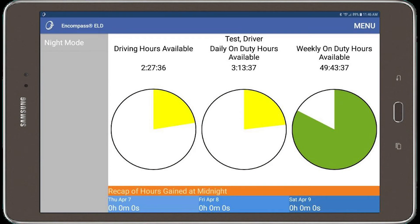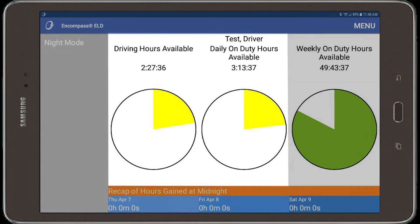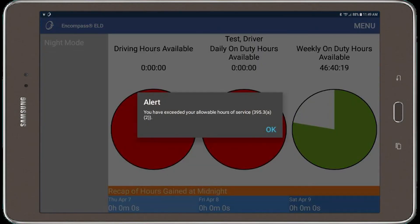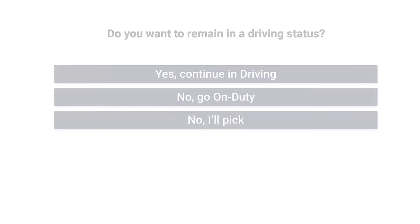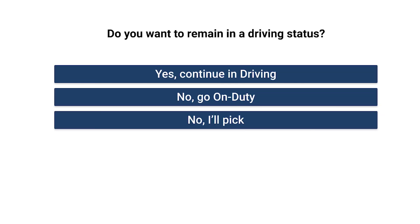These clocks turn yellow when you have 25% of the time left, and they will turn red when you have no driving time left. This means if one clock counts down to zero and turns red, regardless of which one, you would be in violation of the hours of service regulations.